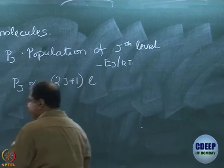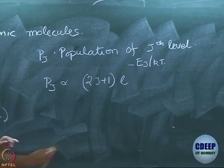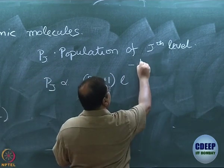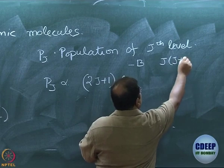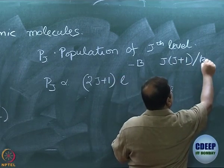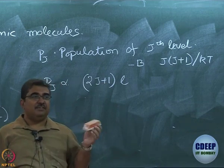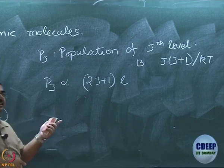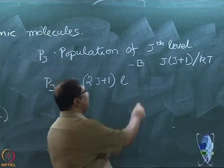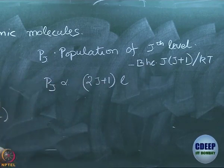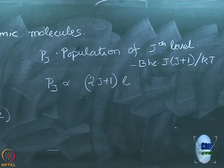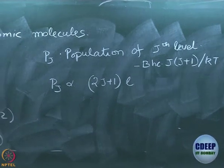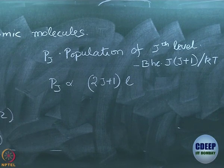Writing out the full expression: P_J ∝ (2J+1) × exp(−BhcJ(J+1)/kT). Note that B is in cm⁻¹, so we convert by including hc, giving minus BhcJ(J+1)/kT. Before going ahead, let us digress and ask a fundamental question about rotational levels — one that does not directly affect the spectrum.